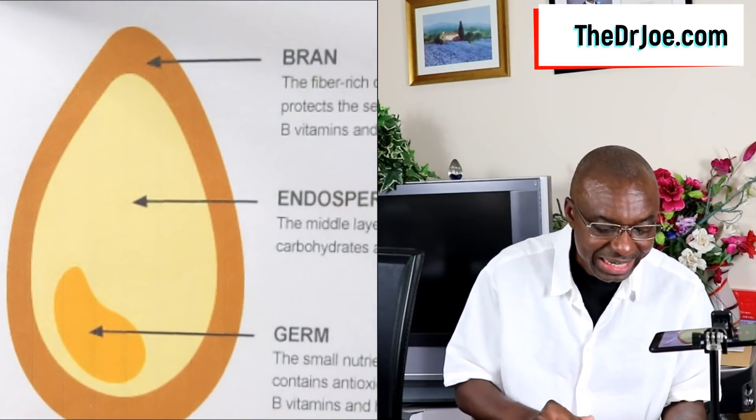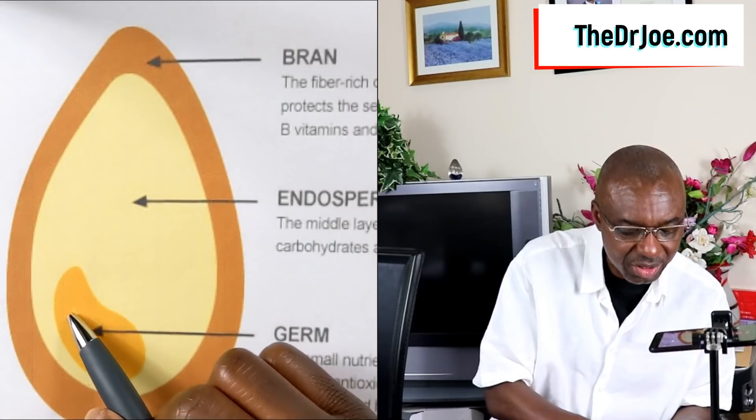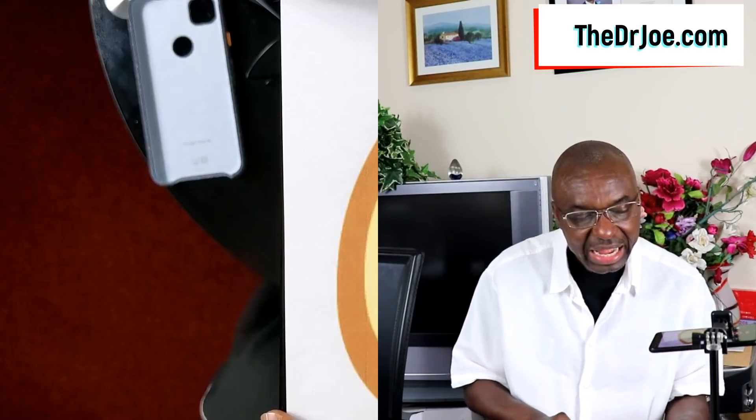Layer number three is the germ. It is in the germ that you've got the reproductive organ of the grain — if a grain is going to sprout, it will develop through the germ. But the germ is not just a reproductive organ; it's quite nourishing too. It's got antioxidants, lots of vitamins, and it also contains the fats.